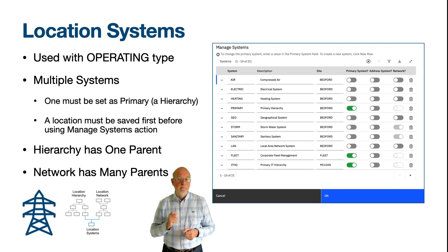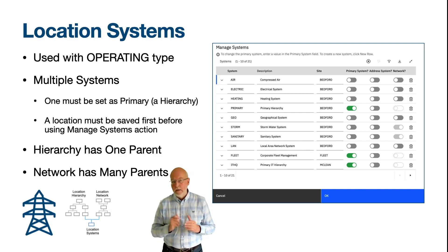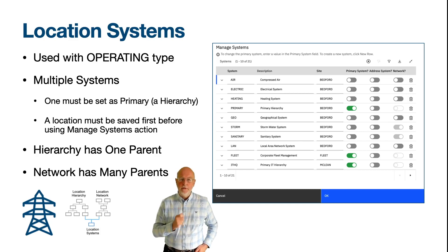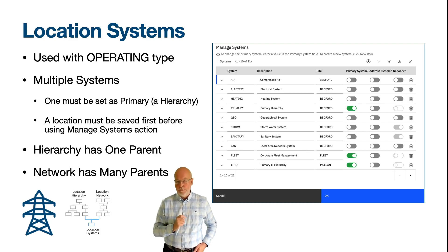An operating location can belong to multiple systems, either hierarchical or network. A location system is a means of grouping locations that share a common purpose. The primary system is often geographic-based and supports drill-down — it is what is needed to help find the assets that exist at those operating locations. The most frequent use of a secondary system is to group locations according to the system they support, for example heating and ventilation, water, power, or drainage.